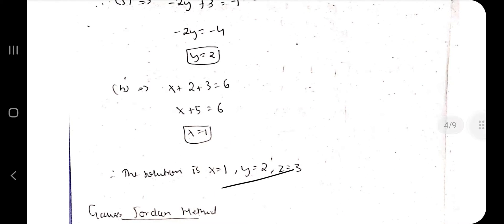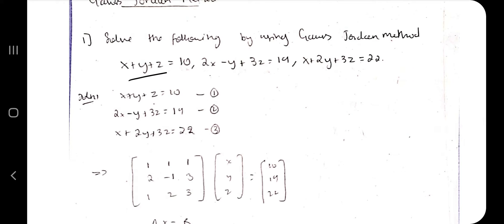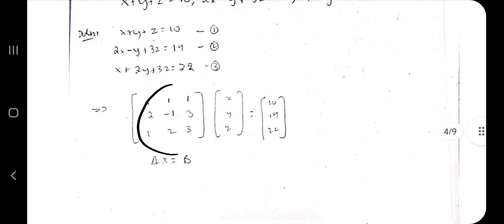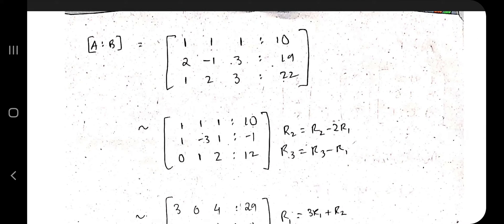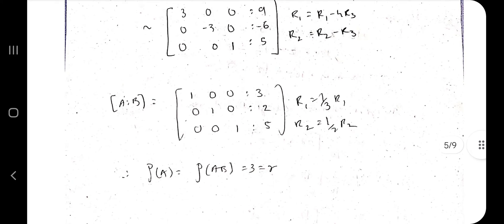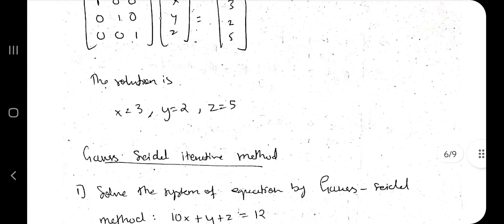The second method is Gauss-Jordan. The setup is the same — write the three equations, form the augmented matrix, and apply row operations. The key difference is that you must achieve a reduced row echelon form where the leading entries form an identity-like diagonal of 1s. Once the matrix is in that form and the rank equals the number of unknowns, you can directly read off the values: for example, x = 3, y = 2, z = 5.